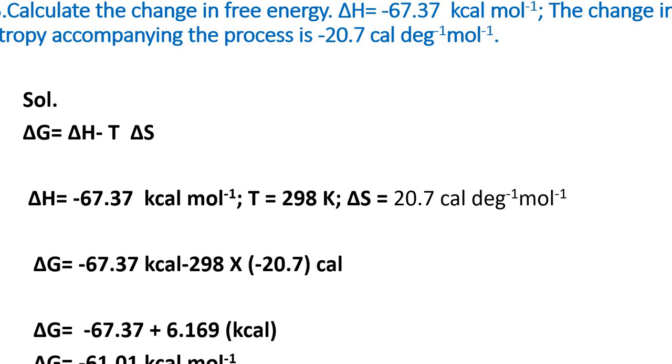Here we apply the formula ΔG = ΔH - TΔS. ΔH is given as -67.37 kcal mol⁻¹. T is 298 K because it's room temperature, 25 degrees centigrade. ΔS is -20.7 cal deg⁻¹ mol⁻¹.